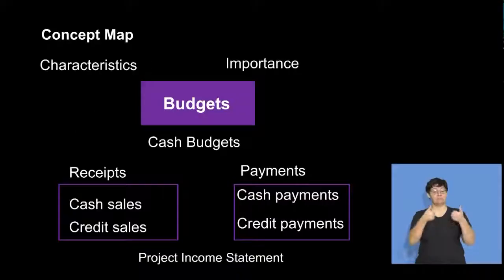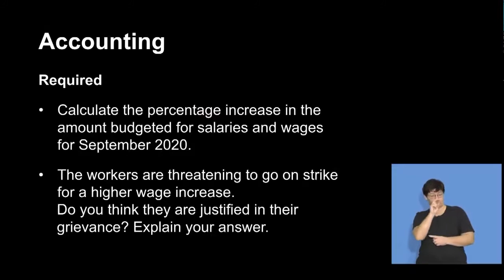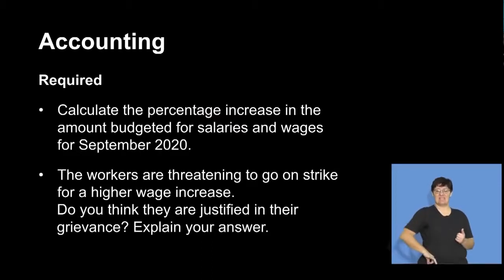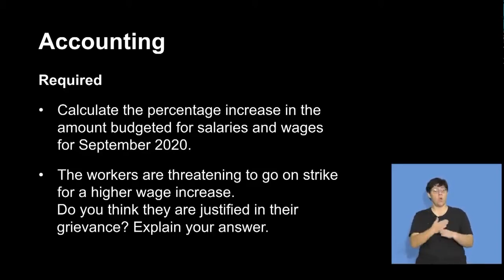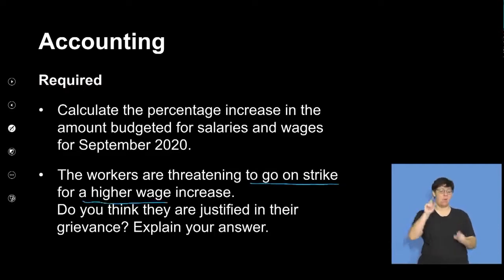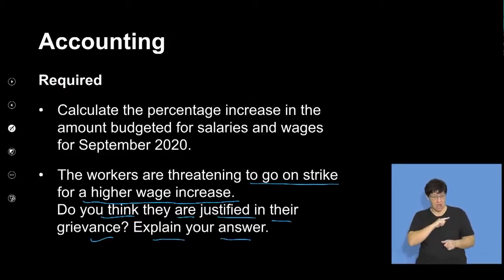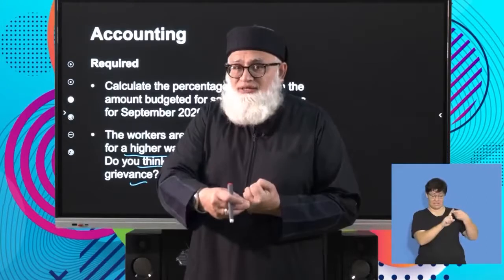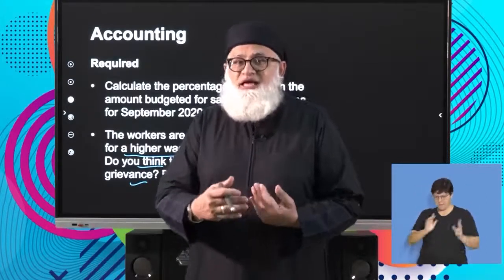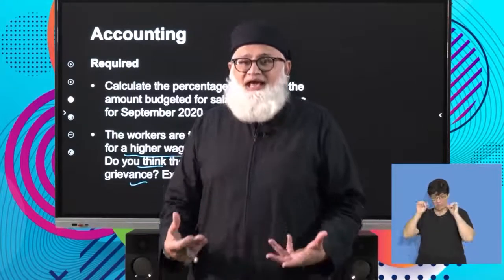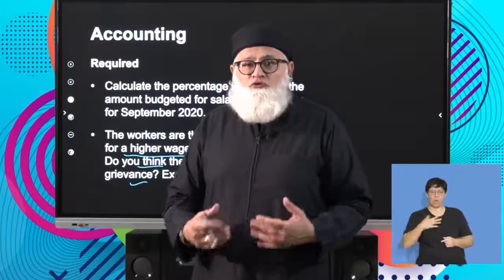The question now says: required — calculate the percentage increase in the amount budgeted for salaries and wages for September 2020. The question further says the workers are threatening to go on strike for a higher wage increase. Do you think that they are justified in their grievance? Explain your answer. So this means you have to first do a calculation, then you have to look at the grievance and see whether they are justified in their action for going on strike.